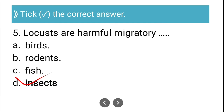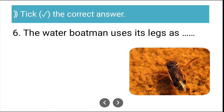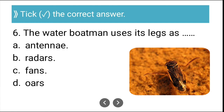Question six: The water boatman uses its legs as — antenna, radar, fans, or oars? The correct answer is oars. The water boatman uses its legs as oars.